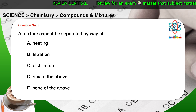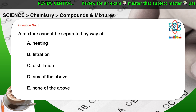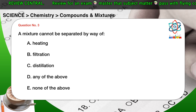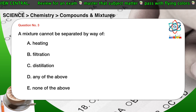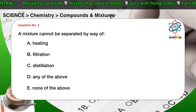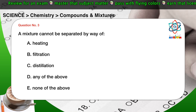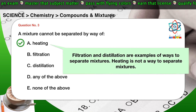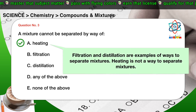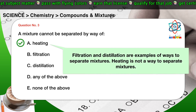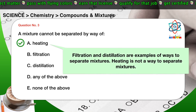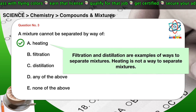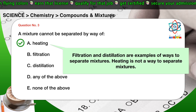Question number three: a mixture cannot be separated by way of — A) Heating. B) Filtration. C) Distillation. D) Any of the above. E) None of the above. The correct answer is A. Filtration and distillation are examples of ways to separate mixtures. Heating is not a way to separate mixtures.